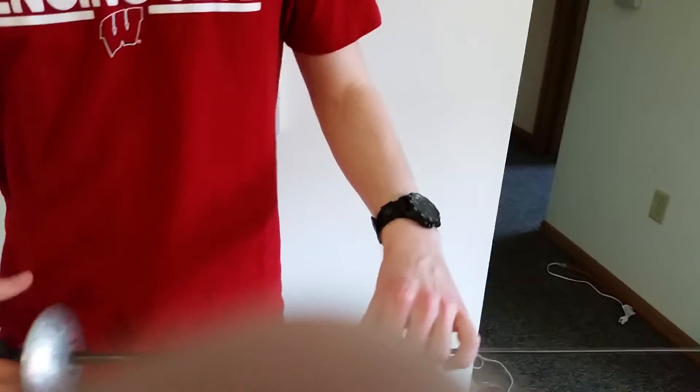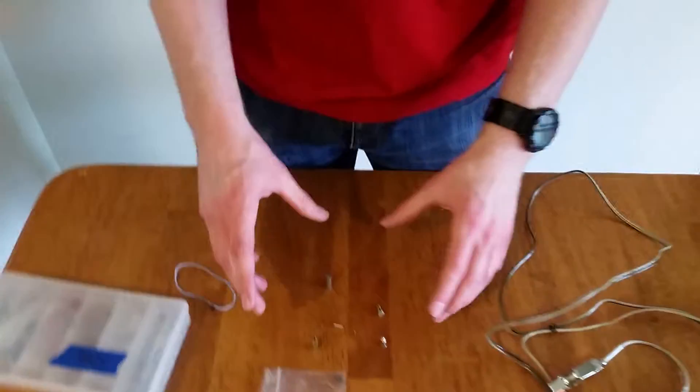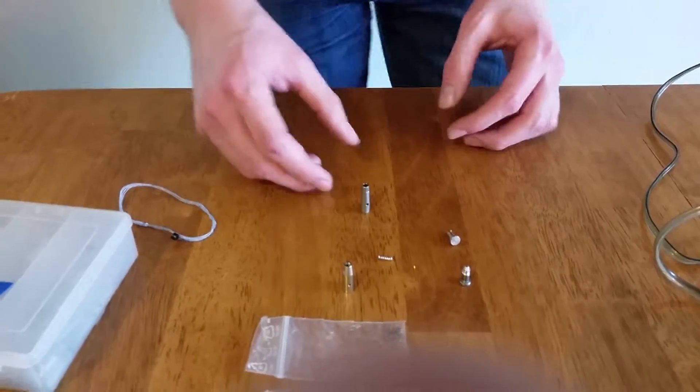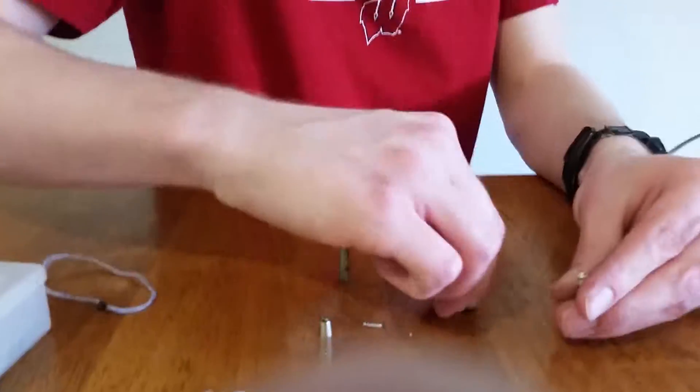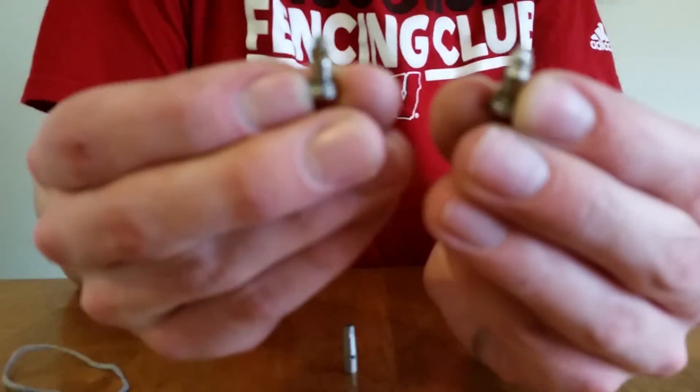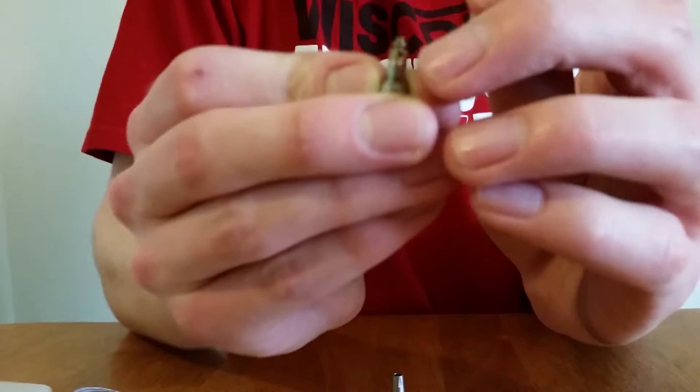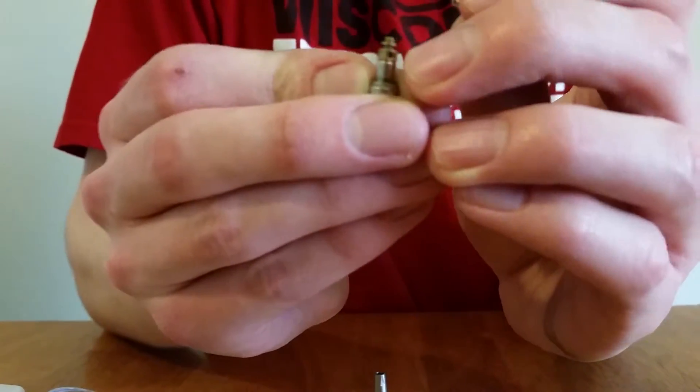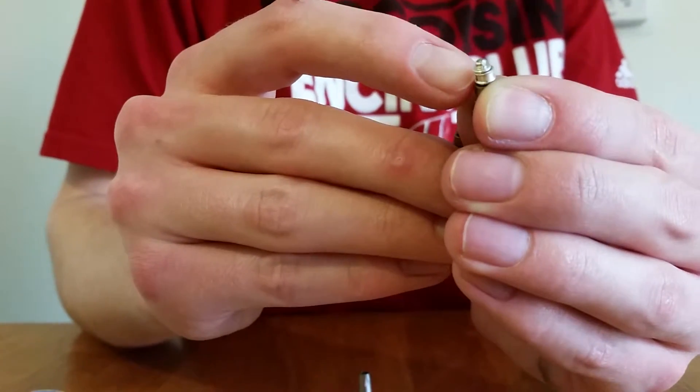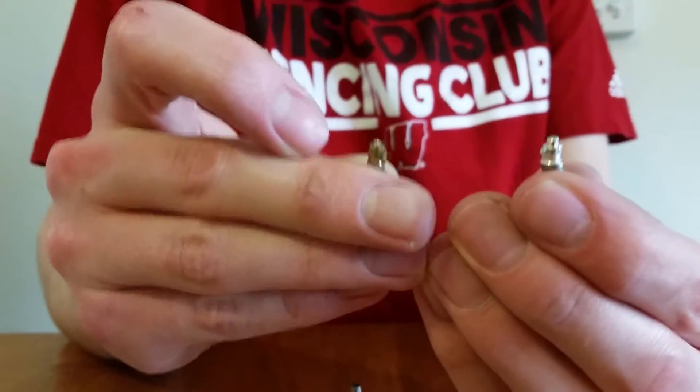But we'll start with looking at some point parts, so I've got a couple different examples down here and the big difference to be concerned with is French versus German. So we're going to start with the tips and if you look at these you'll notice that this one has holes in this little sleeve here. This is a French tip as opposed to the German tip which just sort of has a groove. So the way this actually works differently depending on whether or not you have a French or a German point setup.